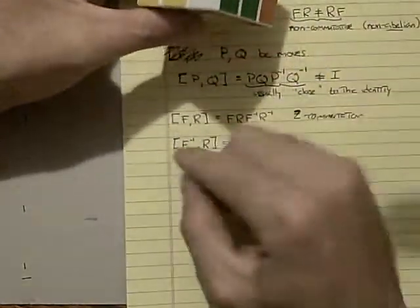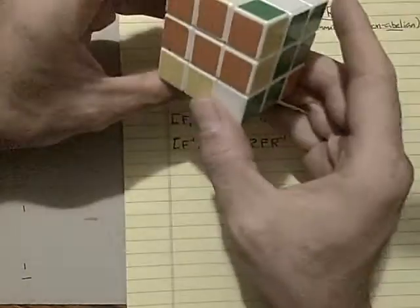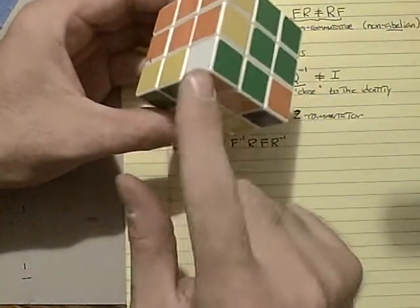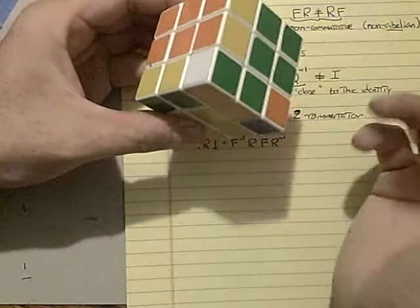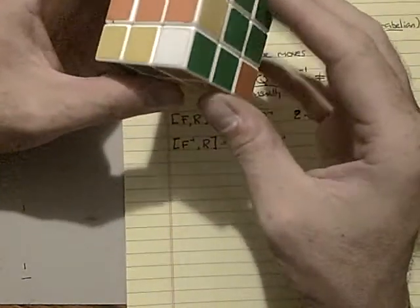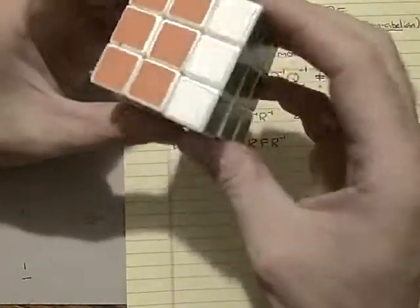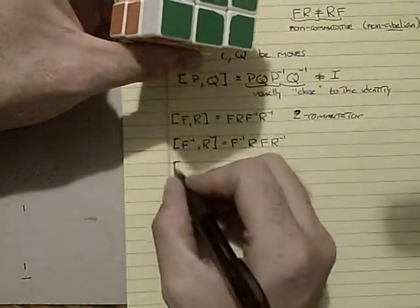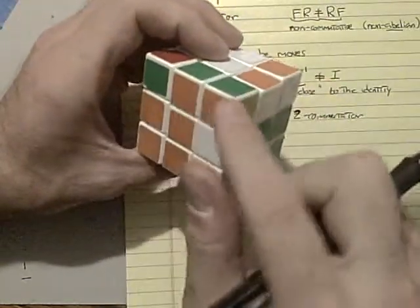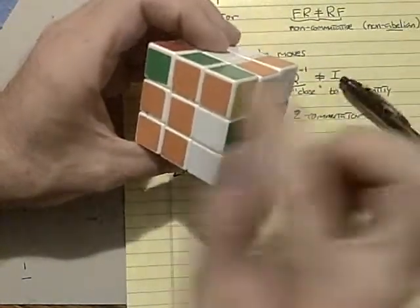Now sometimes it's F, R inverse. It doesn't really matter. If you look at the pieces that were affected, it looks like a Y. If I did instead, if I did F, R inverse, then it does look like a Y, upright Y. In any case, it's a little bit different than the Z commutator.